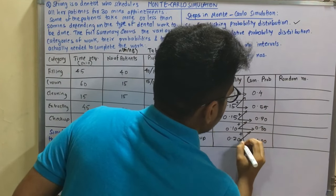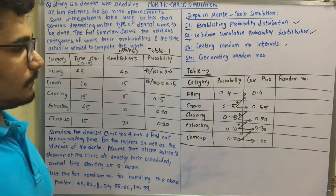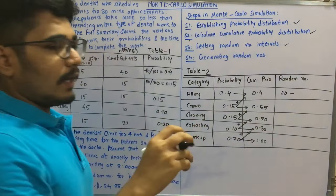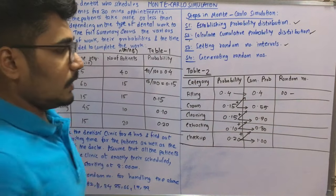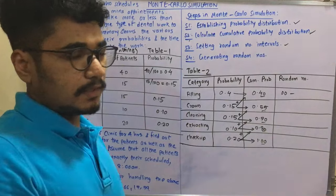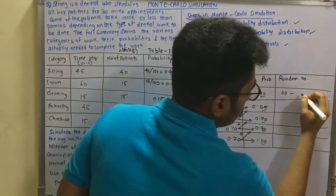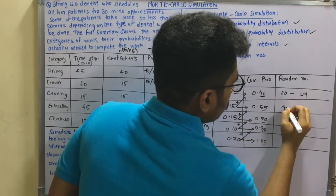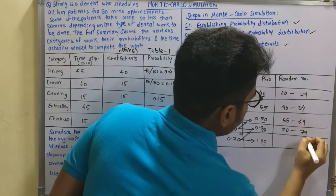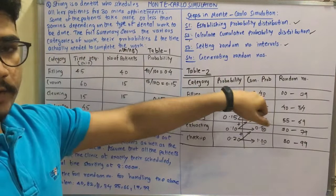Next, we determine the random number intervals. The interval always starts from 0. Using the cumulative probability boundaries, we assign ranges: 00–39 for filling, 40–54 for crown, 55–69 for cleaning, 70–79 for extracting, and 80–99 for checkup. Each range is one less than the final cumulative boundary value. This is how we assign the random number intervals.